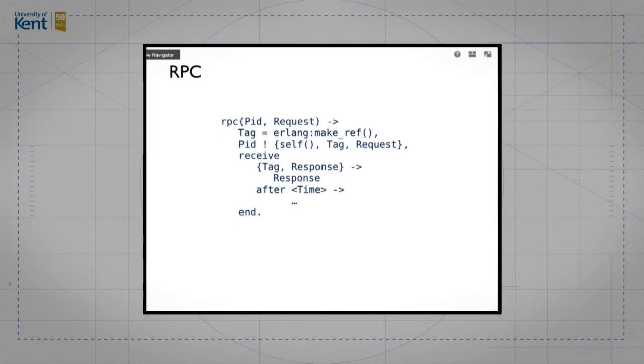We can play tricks with this remote procedure call. One thing we can do is we can split it into two. The remote procedure call actually consists of two parts. It consists of a part which sends a message to a remote process, and it consists of a part which receives a message. Okay. So this code has split it into two.